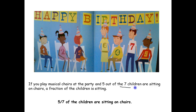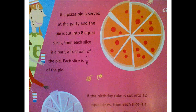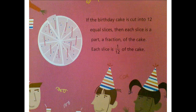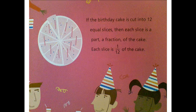So our seven refers to the entire group and five of that group are sitting. If a pizza pie is served at the party and the pie is cut into eight equal slices, then each slice is a part, a fraction of the pie. Each slice is one eighth of the pie. If the birthday cake is cut into twelve equal slices, then each slice is one twelfth of the cake.